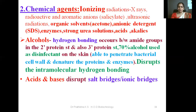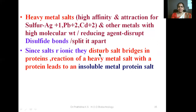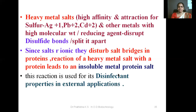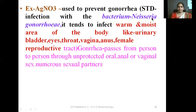Acids and bases disrupt salt bridges or ionic bridges. Heavy metal salts that have high affinity and attraction for sulfur — such as silver, lead, and cadmium — and other high-molecular-weight metals or reducing agents disrupt disulfide bonds and split them apart. Since salts are ionic, they disturb salt bridges in proteins, and the reaction of a heavy metal salt with a protein leads to an insoluble metal-protein salt. This reaction is used for its disinfectant properties in external applications. For example, silver nitrate is used to prevent gonorrhea, a sexually transmitted disease (STD).